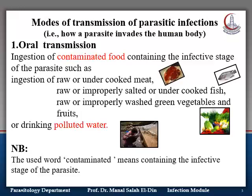First, there is oral transmission through ingestion of contaminated food containing the infected stage of the parasite. This contaminated food — and by the word contaminated, I mean that it contains the infected stage — it could be raw or undercooked meat, raw or improperly cooked fish, or improperly salted fish. It could also be raw or unwashed green vegetables and fruits, besides drinking contaminated or polluted water containing the infected stage.